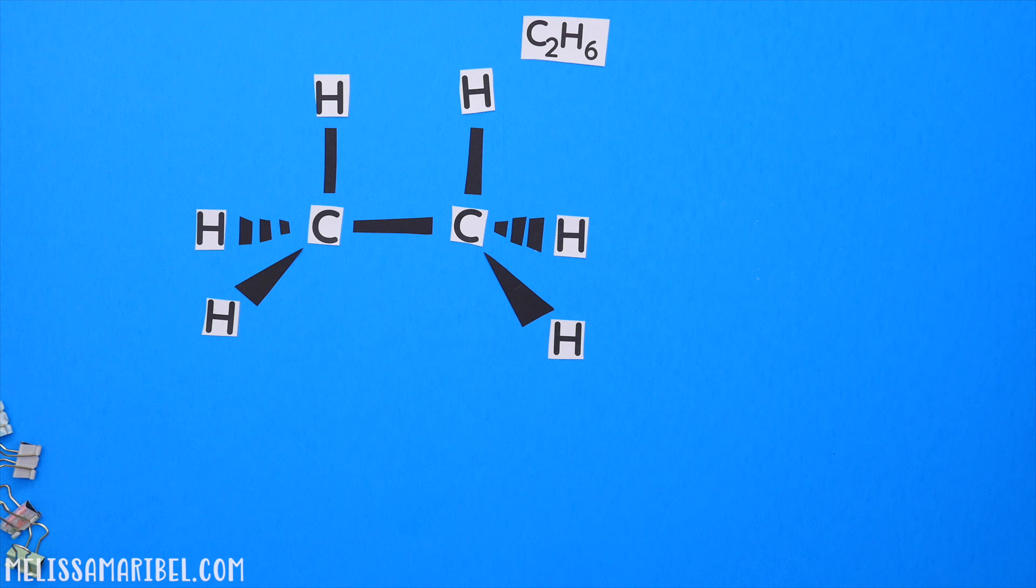Let's draw C2H6 in its VSEPR form. So it has a geometry of tetrahedral since each carbon has four bonds. Each carbon will have one hydrogen with a solid line, dash line, and wedge line.